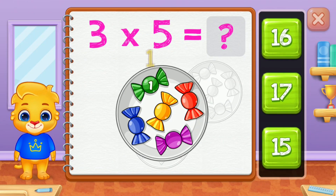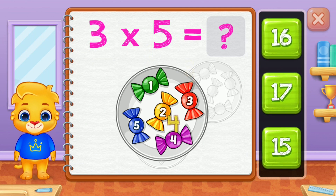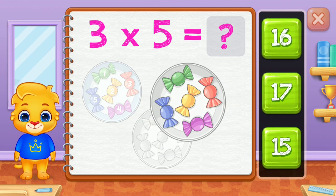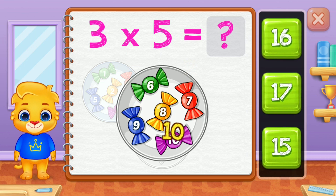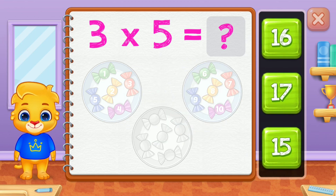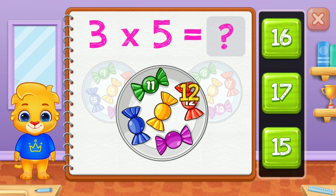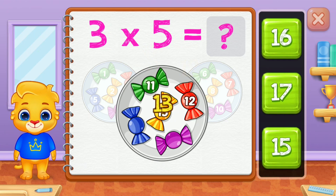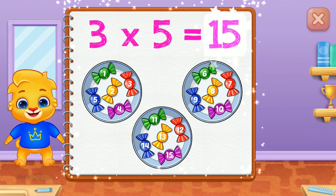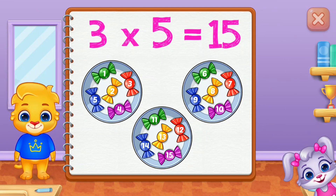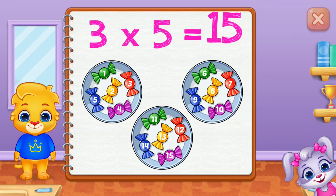One, two, three, four, five, six, seven, eight, nine, ten, eleven, twelve, thirteen, fourteen, fifteen. Three groups of five equals fifteen.